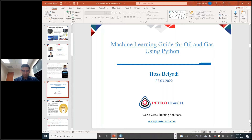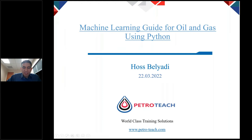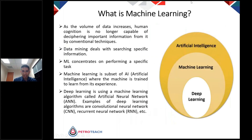Thank you to PetroTeach for the invitation. Today we'll talk about machine learning guide for oil and gas using Python. The first question I always ask is: what is machine learning? Before going into detail, let's define the key terminologies — AI, machine learning, and deep learning — since they are often used interchangeably. AI stands for artificial intelligence: using machine intelligence as opposed to human or animal intelligence.